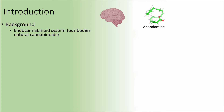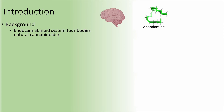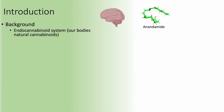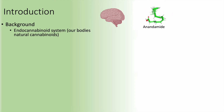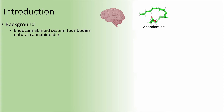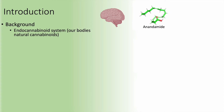First, our body contains an endocannabinoid system. This system involves molecules produced by your brain and body that serve a variety of functions. Cannabinoids produced by your body are called endocannabinoids. The most well-studied endocannabinoid is called anandamide.